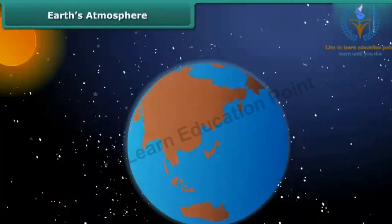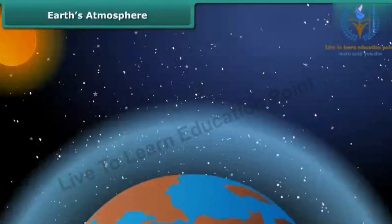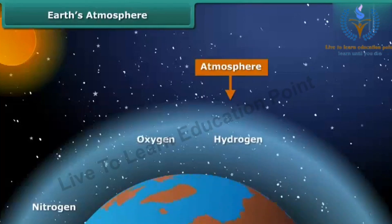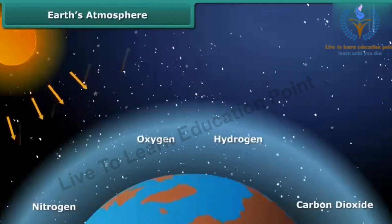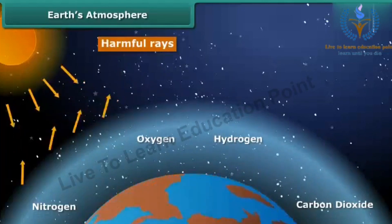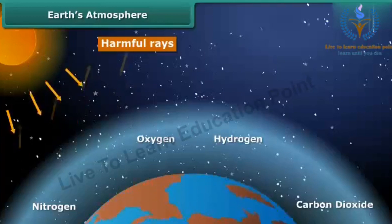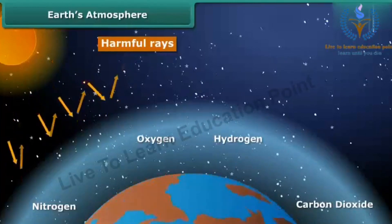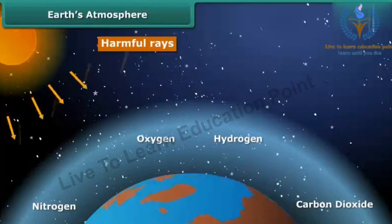Our earth is surrounded by a blanket of several gases called the atmosphere. This atmosphere contains mainly nitrogen, oxygen, hydrogen, and carbon dioxide along with some other gases. The atmosphere protects us from harmful rays from the Sun and plays a very important role in regulating the temperature of the earth to sustain life on it.